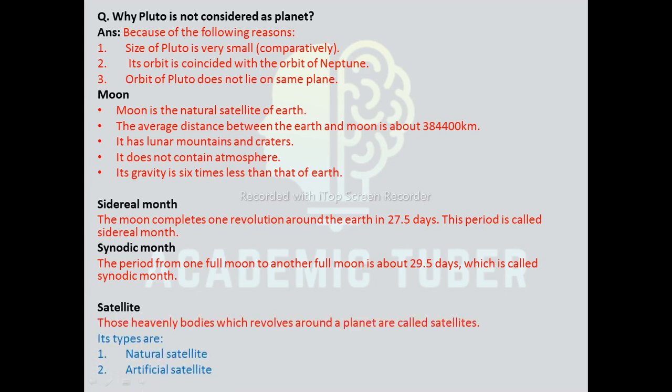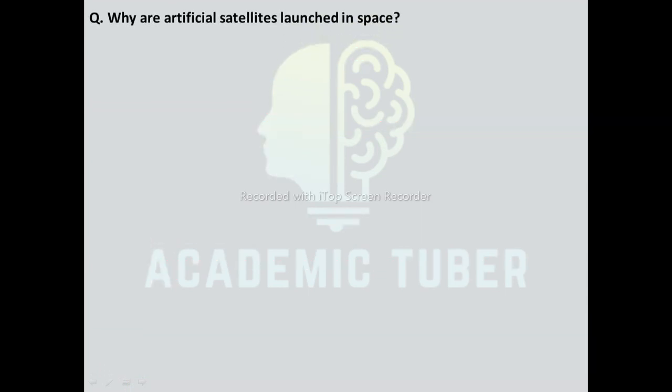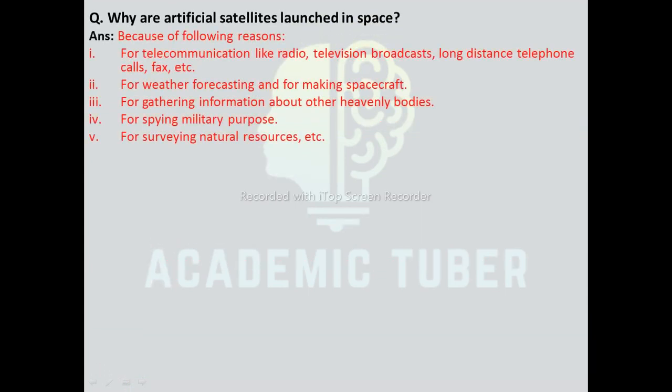Those heavenly bodies that revolve around a planet are called satellites. There are two types of satellites: natural satellites and artificial satellites. Artificial satellites are launched in space for the following reasons: for telecommunication like radio, television broadcasts, long-distance telephone calls, and fax; for weather forecasting; for making spacecraft for gathering information about other heavenly bodies; for military purposes; and for surveying natural resources.